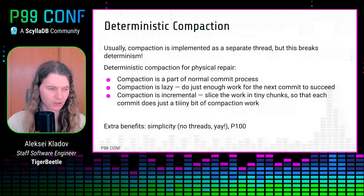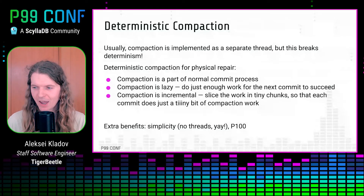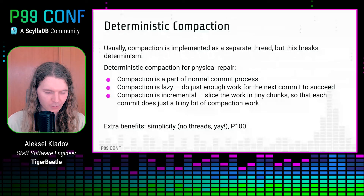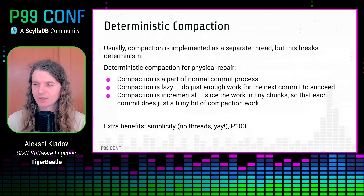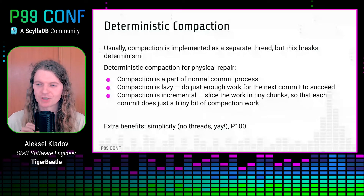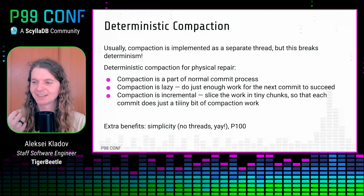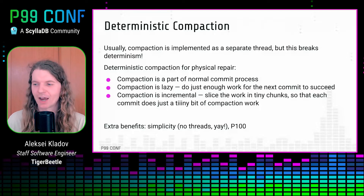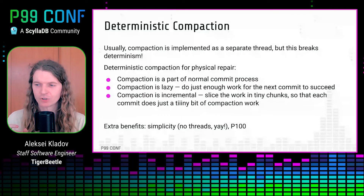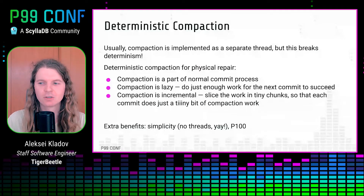The idea here is to steal a page from language runtimes and implement compaction just-in-time, similar to how some people implement garbage collection. For many GC algorithms there is a separate GC thread which periodically pauses your application and runs garbage collection. But there is a much simpler just-in-time strategy: run GC during allocation, during the call to malloc. Every time the application calls malloc, it does a little bit of garbage collection. This is exactly the idea for making compaction deterministic in TigerBeetle. During normal transaction processing, during normal commits, every time we process a request, we do a tiny bit of compaction.